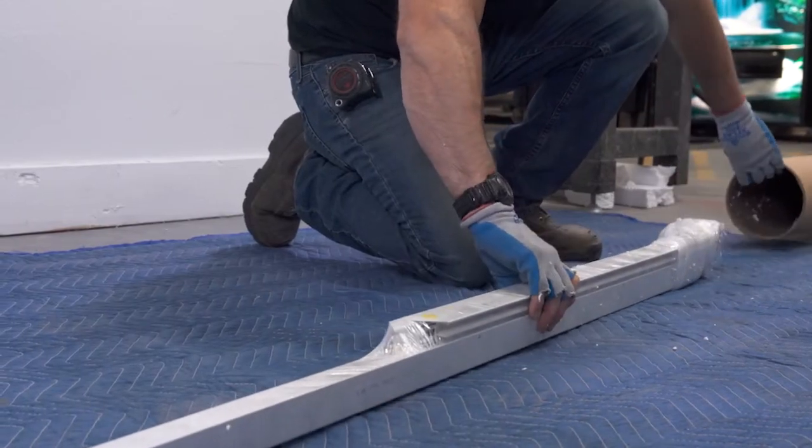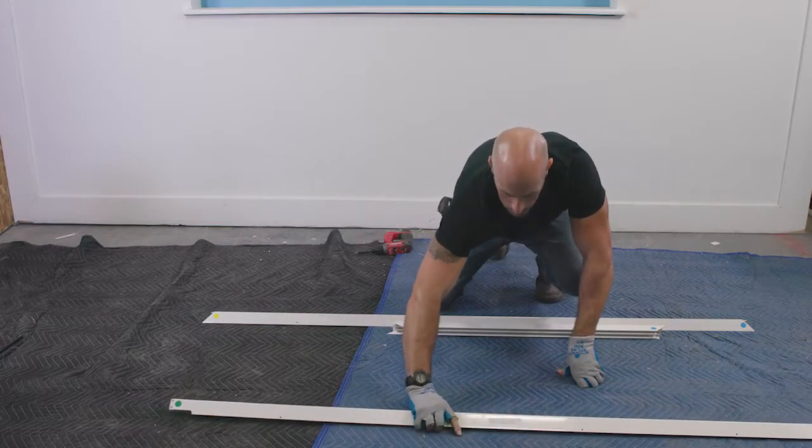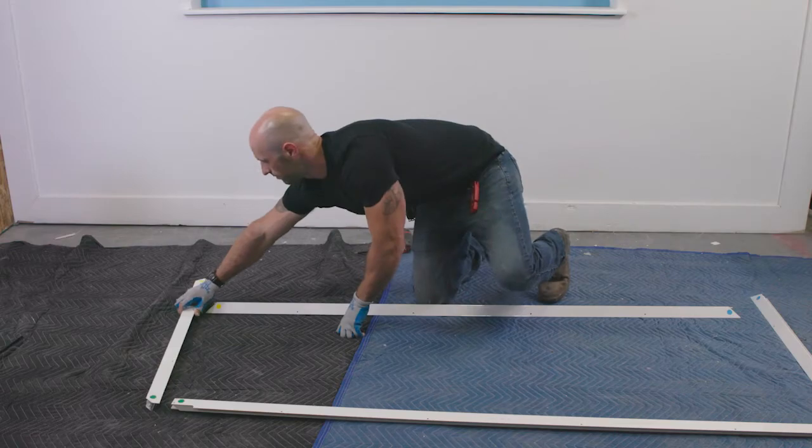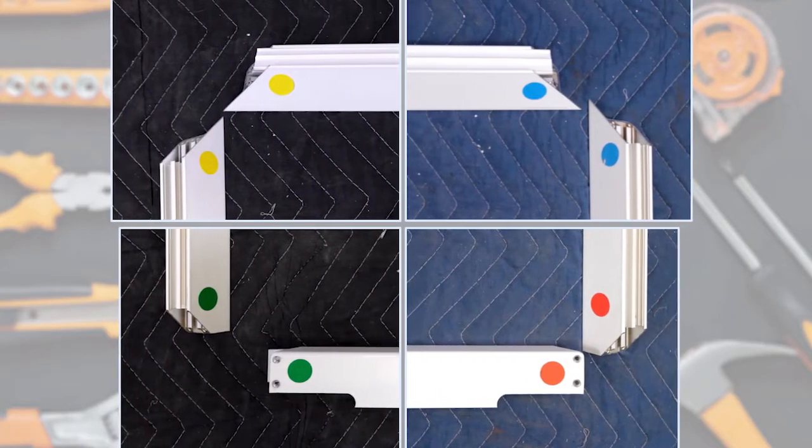Remove the wrapping from the frames and spread them out on the floor in the loose shape of the opening. Notice that all edges have a colored sticker. Pair each end to its matching color.